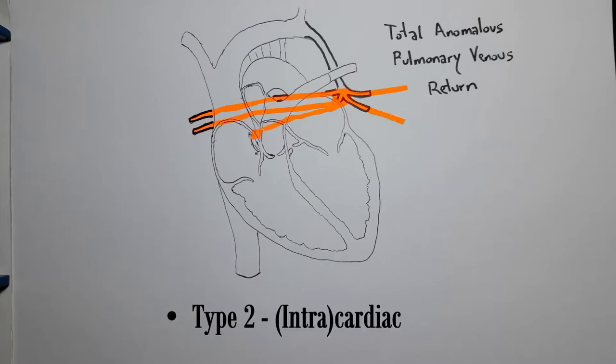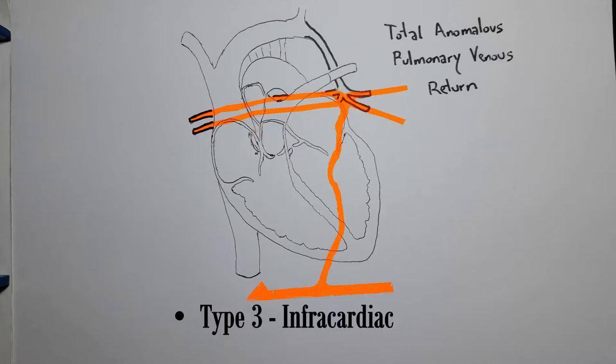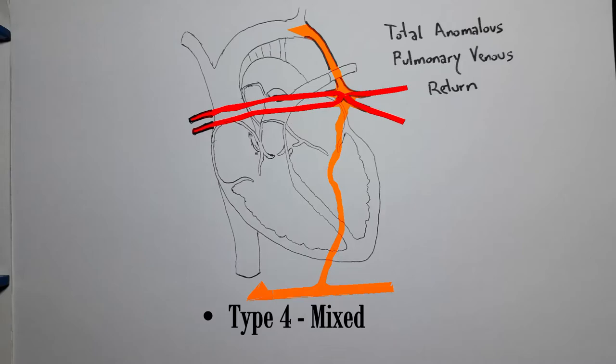We have Type 2, the cardiac drainage or intracardiac drainage, in which the pulmonary veins drain into the coronary sinus or directly into the right atrium. Then Type 3, the infradiaphragmatic connection, also referred to as infracardiac drainage, in which the pulmonary veins cross the diaphragm to drain to the portal venous system. And finally Type 4, the least common, with mixed connections, in which the pulmonary veins may drain into different or multiple sites.